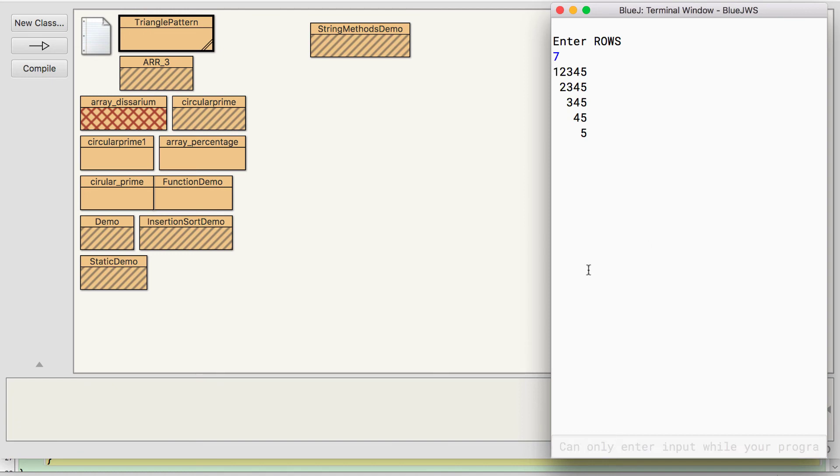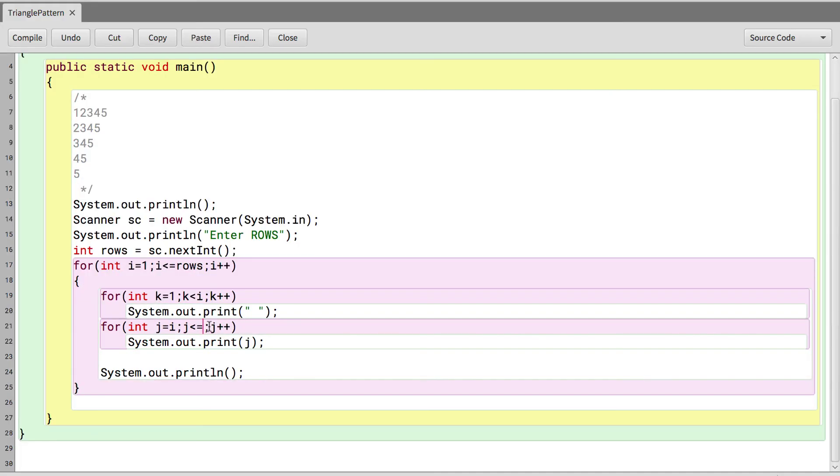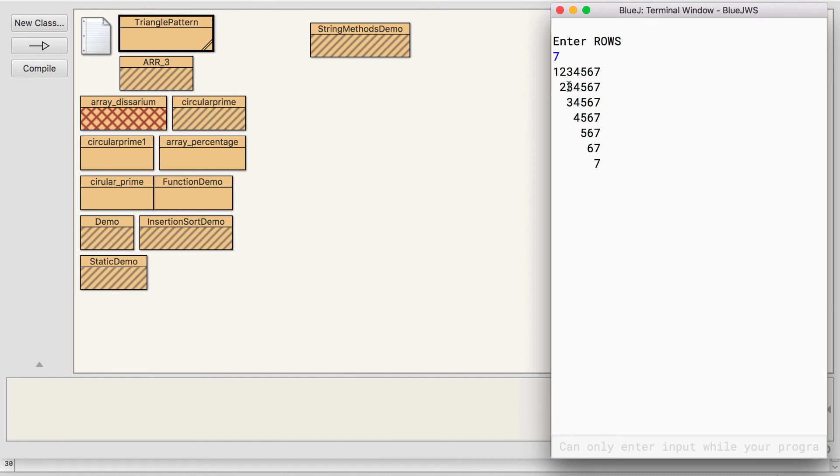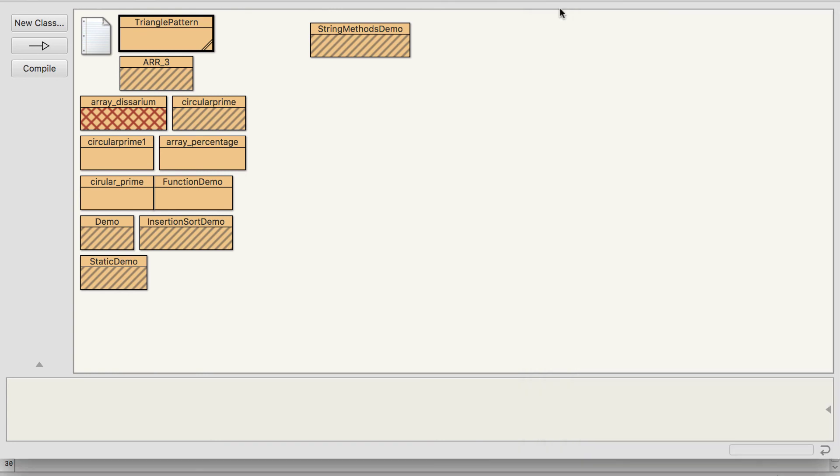So let's compile, execute and see. Enter the number of rows—I say 7. j less than equal to rows, right? So compiled, execute, number of rows. You can see as the number of rows increases, the number of spaces also increase.